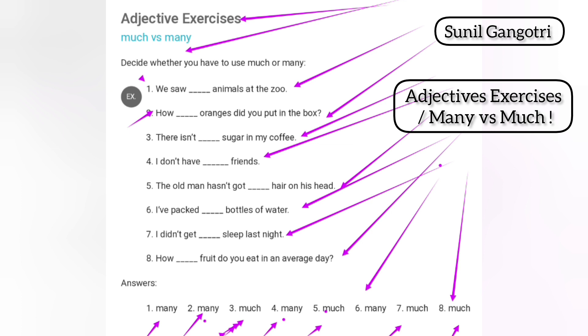One to eight, you can listen carefully. All right. We saw many animals at the zoo. How many oranges did you put in the box?